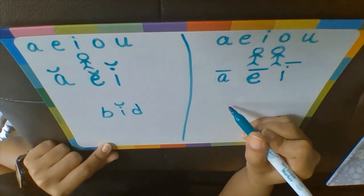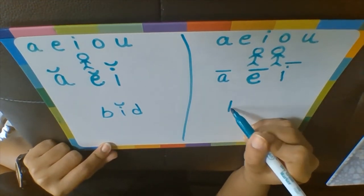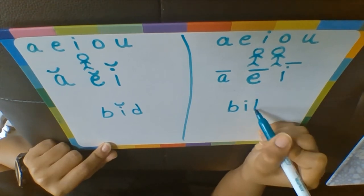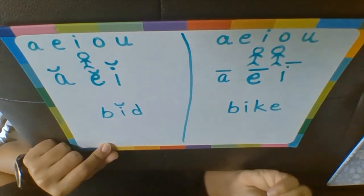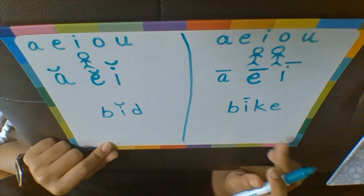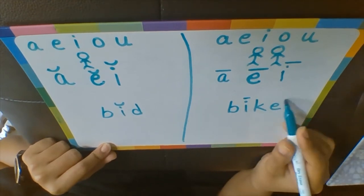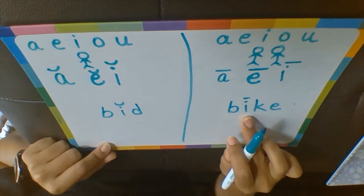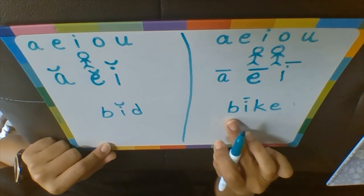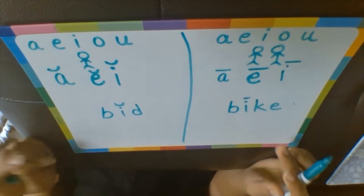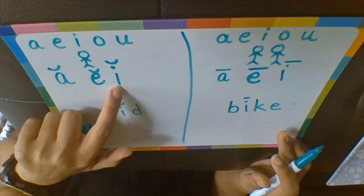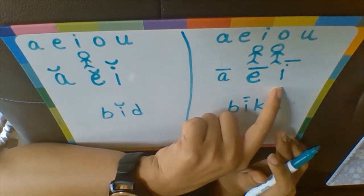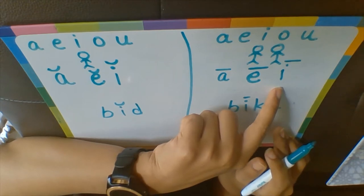Let's try another word. It's not alone — it has a friend. The E is the friend here. So it sounds B-IKE: BIKE. So short I is the phonic sound /ɪ/, and long I is the alphabet sound I.